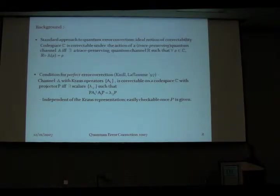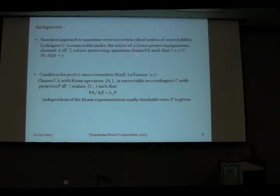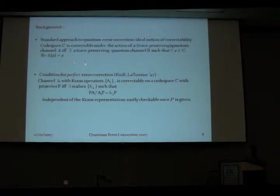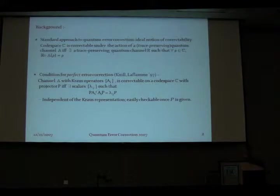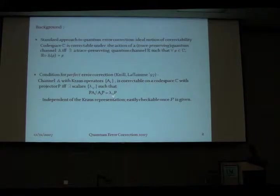Let me recall the standard approach to quantum error correction, where we have this ideal notion of correctability: a channel is said to be correctable on a code space C if there exists a trace-preserving recovery such that every state in the code space is brought back to itself under the action of R composed with A. This naturally leads to conditions under which perfect error correction is possible. These conditions are actually independent of the Krauss representation of the channel A, and are easily checkable once the code space P is given.